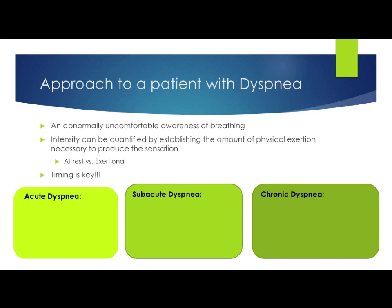Approaching the patient with dyspnea: patients will describe it in different ways — chest tightness, can't catch my breath, can't take a deep breath. Patients with congestive heart failure might say they feel 'air hungry' or suffocating. They won't say 'I have dyspnea.' We have to ascertain that from the common terms they use. Basically, it's an abnormal, uncomfortable awareness of breathing, and the intensity can be quantified by how much physical exertion is needed to produce the sensation — dyspnea at rest is much more severe than dyspnea only with exertion.